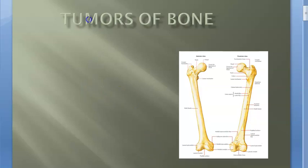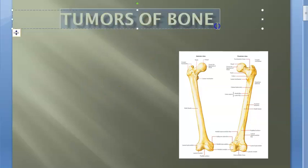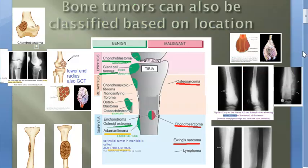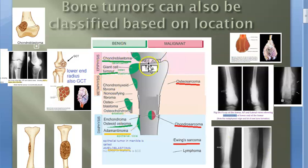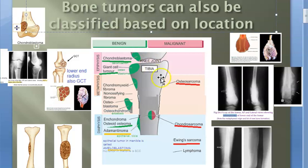In this video we want to look at the classification of tumors of bone. This topic you have already seen in pathology, but we will look at it again here in orthopedics. Bone tumors should be remembered based on many things — first, let us look at classification based on location.